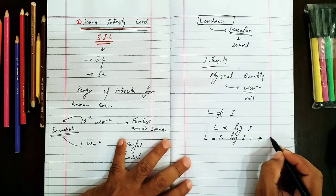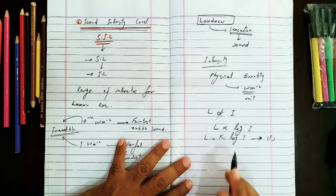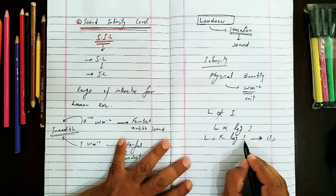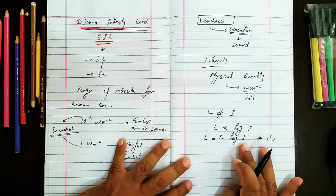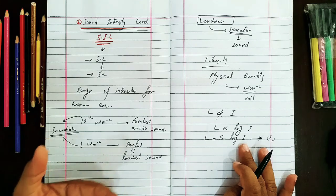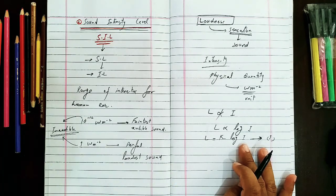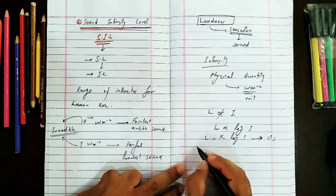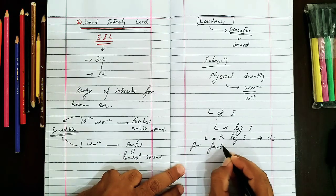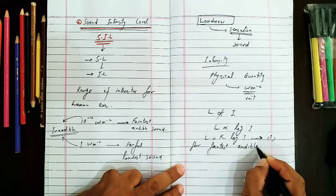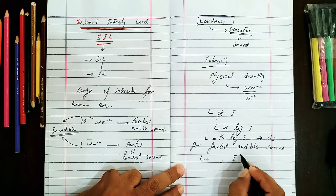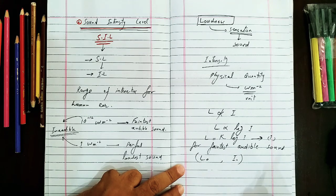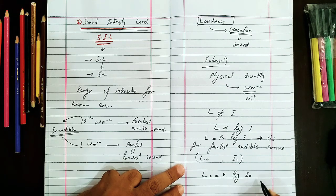When we remove the sign of proportionality, we use equal and a constant k. This equation is for a sound of unknown loudness and unknown intensity. But if we want to write this equation for a known sound whose loudness and intensity are known — let's suppose for the faintest audible sound whose loudness is L0 and intensity is I0 — this equation can be written as L0 equals k log I0.